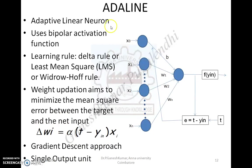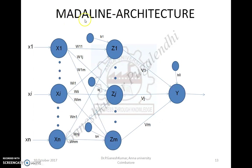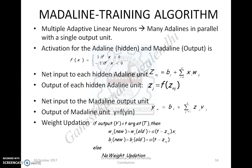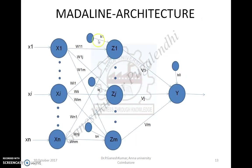Adaline is a single output unit model. Madaline — multiple adaptive linear neuron — provides a set of nodes in the input layer, a set of nodes in a hidden layer situated between the input and output layers, and a single node in the output layer. The output calculation is carried out by computing the net input in two stages: one at the hidden layer stage and another at the output stage. You use these expressions to calculate the net input and output at the hidden layer using a threshold or activation function, and then the net input and final output at the output layer.